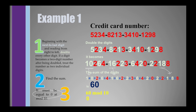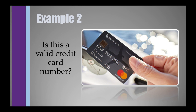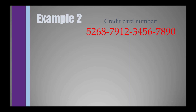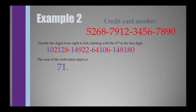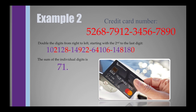For our second example, let's determine whether 5268791234567890 is a valid credit card number. Starting from the next-to-last digit (9), we double every other digit: 9, 7, 5, 3, 1, 7, 6, and 5. After doubling: 5→10, 6→12, 7→14, 1→2, 3→6, 5→10, 7→14, 9→18. Adding all individual digits gives 71. Since 71 modulo 10 gives remainder 1, not 0, this credit card number is invalid.